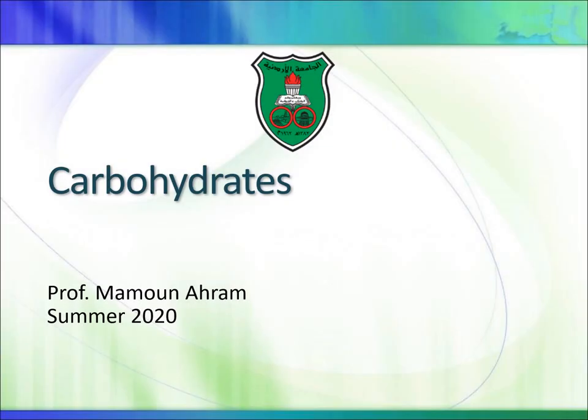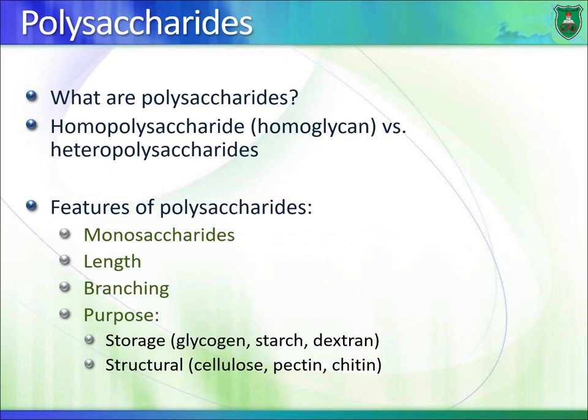This is the third and final part of the carbohydrates lecture, covering polysaccharides. Polysaccharides are polymers composed of hundreds to thousands of sugar residues. Those with the same residue are called homopolysaccharides, while those with different residues are called heteropolysaccharides.